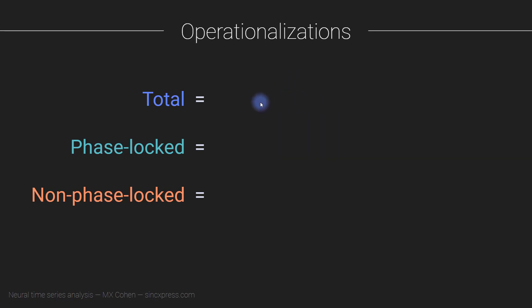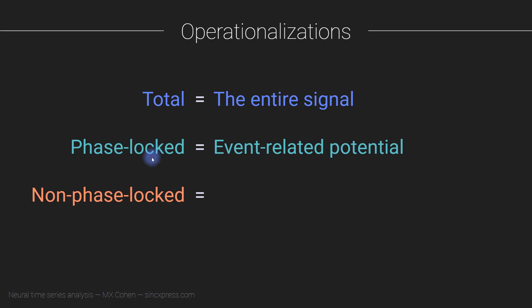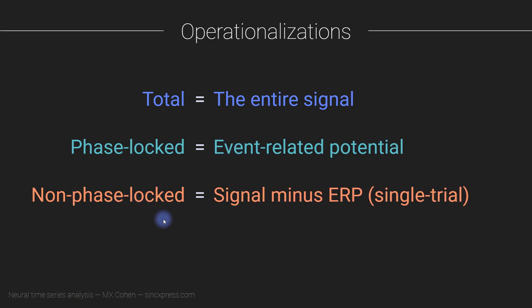It's pretty easy. We assume that the total signal is just the signal you already have — without doing anything to it, other than cleaning of course. Then, how do we operationalize the phase-locked part of the signal? We literally define it as the event-related potential: any features of the data that survive time-domain trial averaging is the ERP, and that is the phase-locked part of the signal.